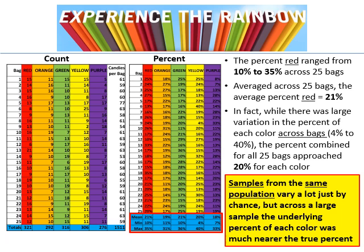Hopefully you see that samples from the exact same population really do average around 20% of each color, but they can vary a lot from sample to sample just by chance. When you get a big sample or combine across multiple small samples, you start getting closer and closer to estimating that true population percentage — which is 20% of each color.